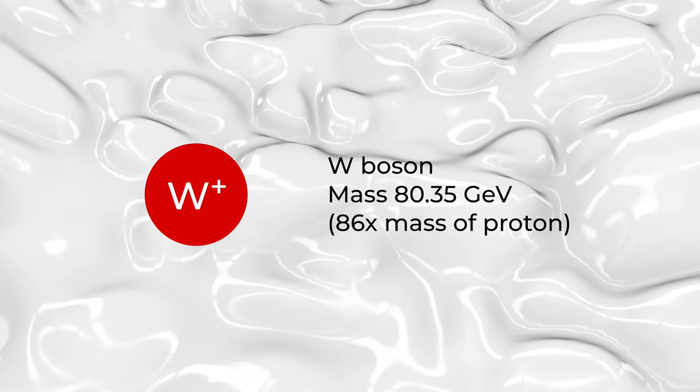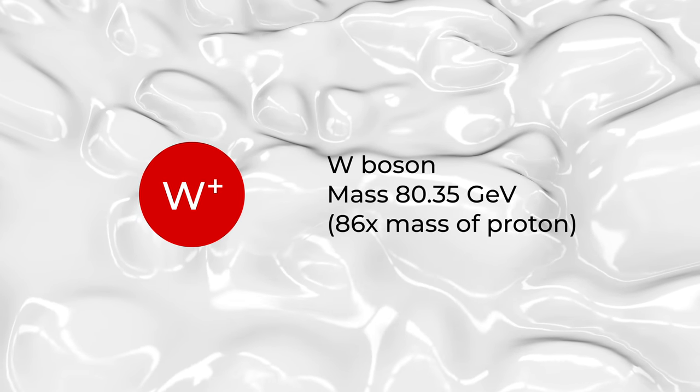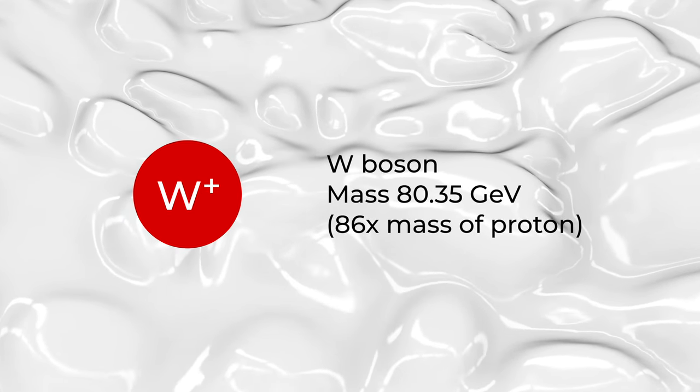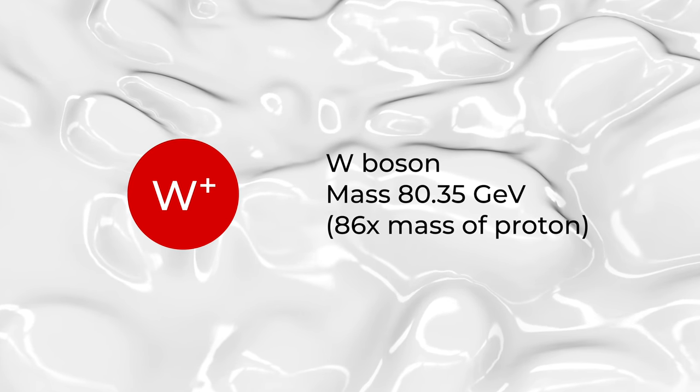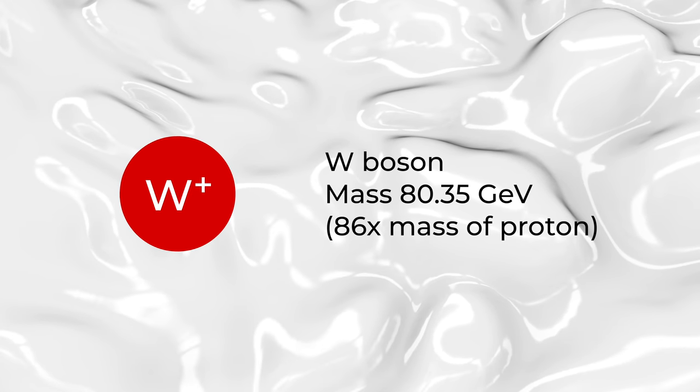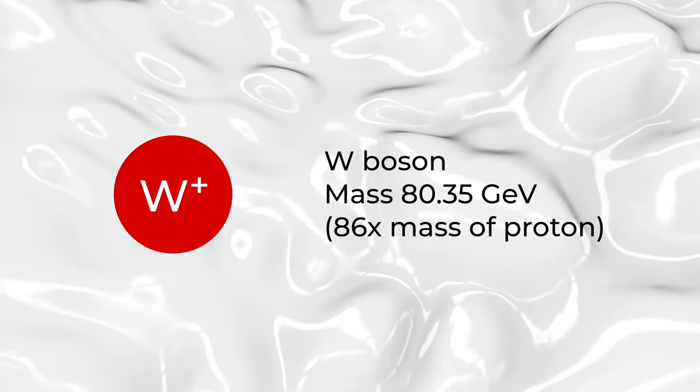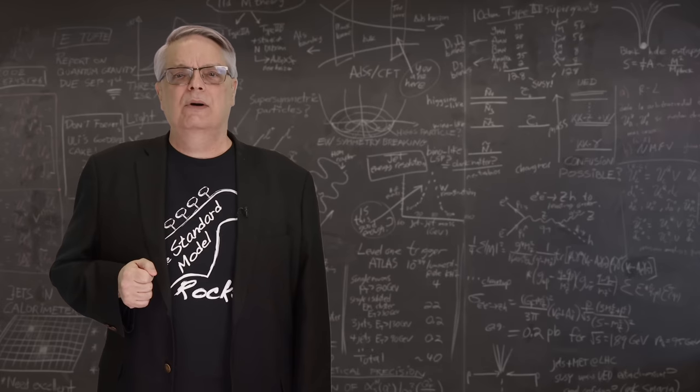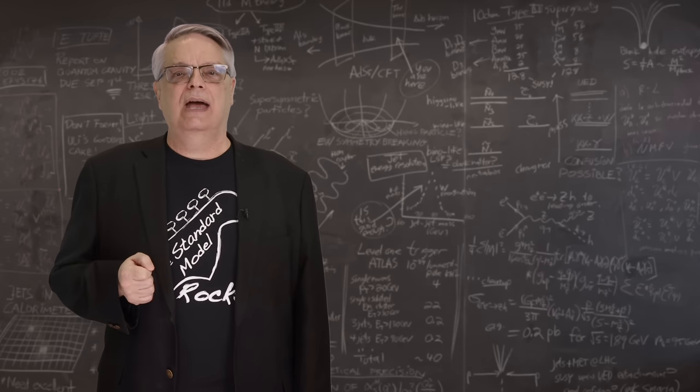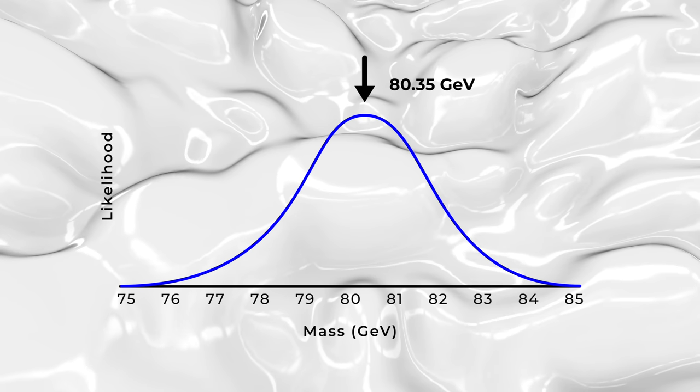Let's take the W boson as an example. If you look up the mass of the W boson, you'll see that it's 80.35 GeV, or just shy of 86 times as heavy as the proton. But when you're talking about quantum particles, stating the mass is only part of the story.